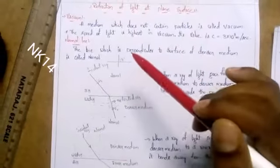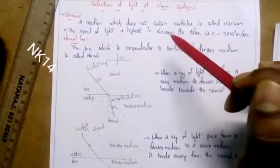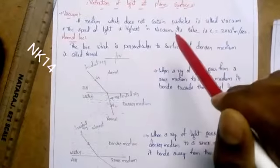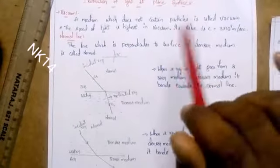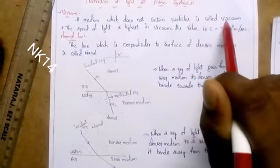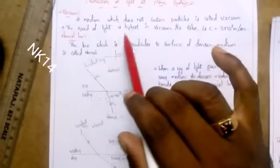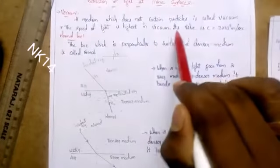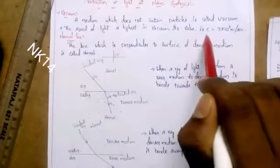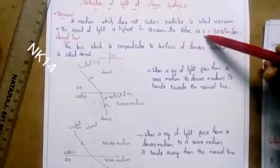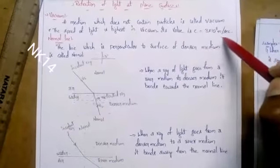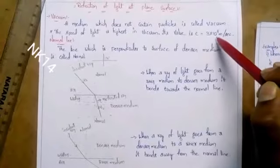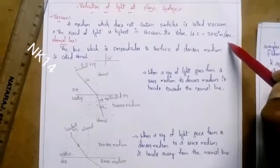In vacuum, the speed of light will be the highest because there are no particles and therefore no obstacle for the passing of light. The speed of light is highest in vacuum; its value is c, which is 3 × 10⁸ meters per second, approximately 3 lakh kilometers per second.